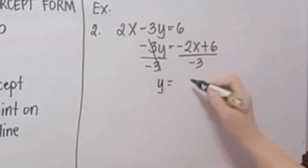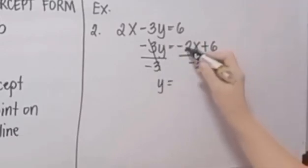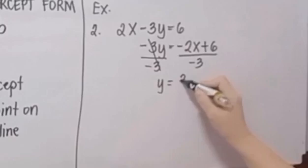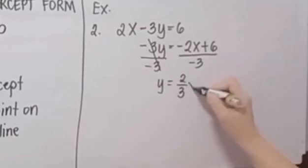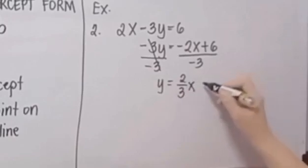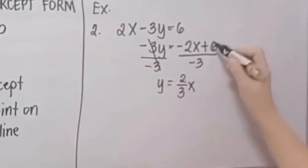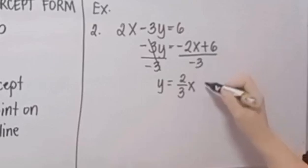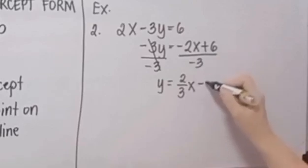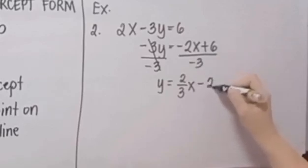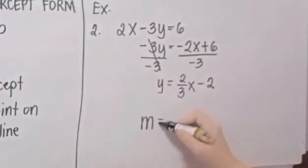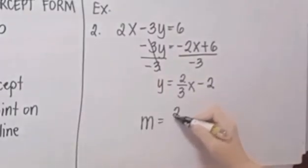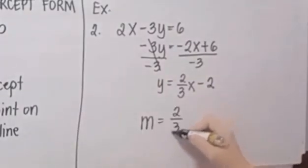Y is equal to negative 2 divided by negative 3, which is positive two-thirds X. Then positive 6 divided by negative 3 is negative 2. So our slope is two-thirds.